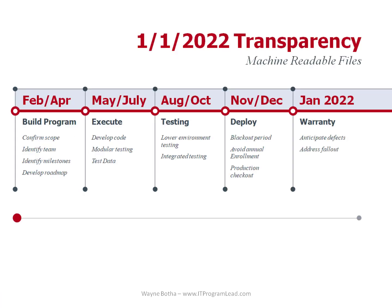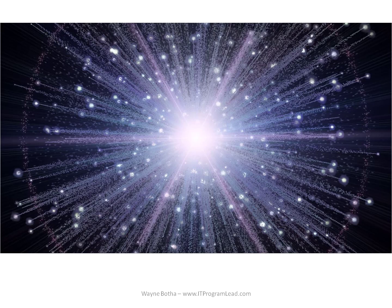For the work to be done in 2021 to reach the 01-01-2022 deliverable, here is a starting point. Initially, you must get the program established, which includes confirming the scope of work and identifying the teams to do the work. Then the code must be delivered, tested, and deployed. This is not strictly sequential — there may be sub-components of code that can be developed and tested early and then deployed into production. Try to avoid the big bang approach by putting smaller pieces of code into production during the year so that you can make incremental changes and catch defects earlier.